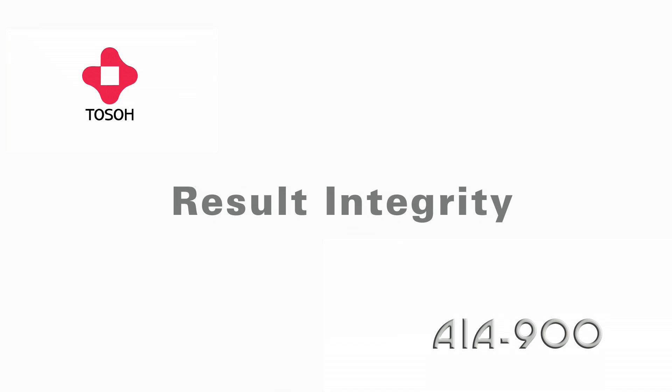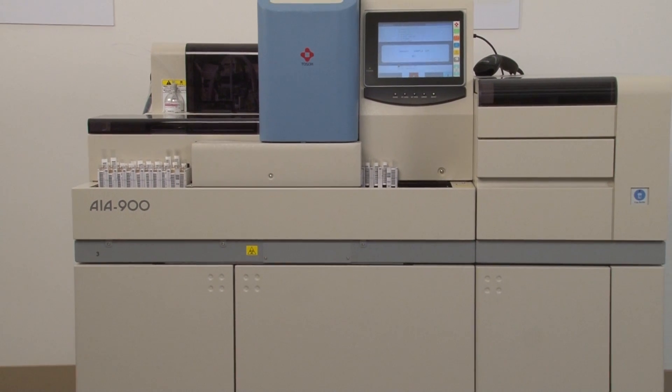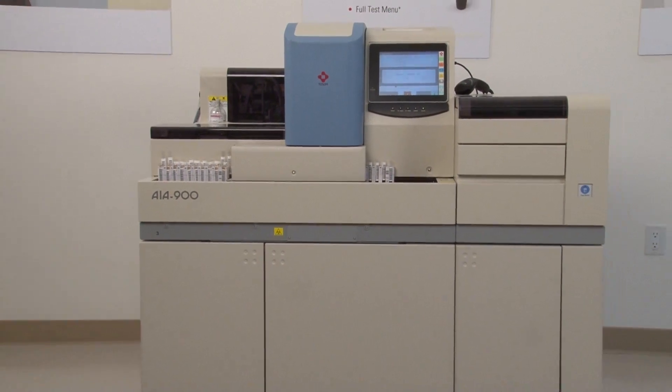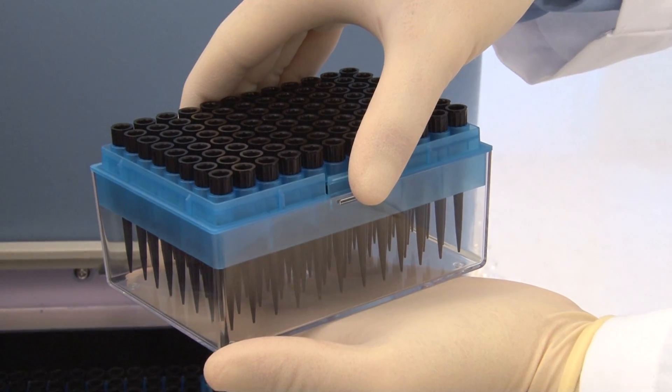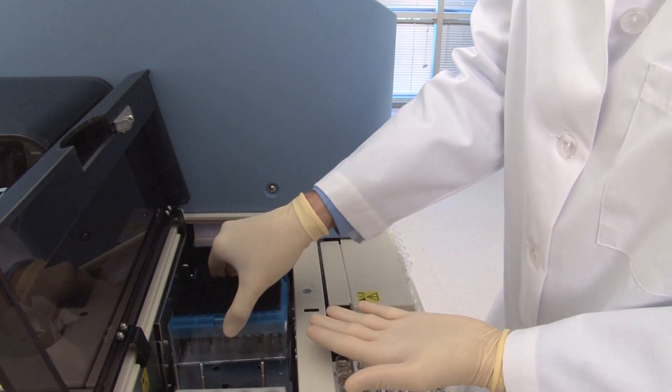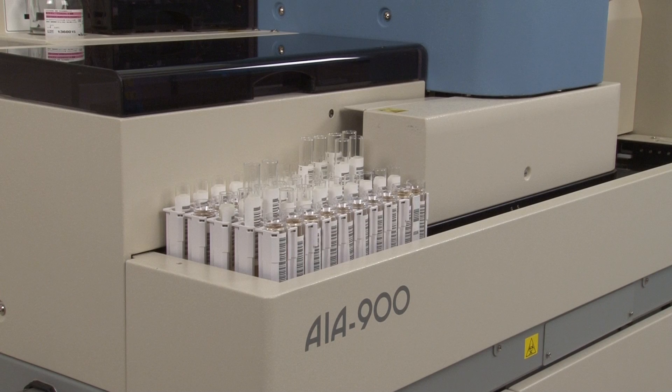Result integrity. To ensure the highest level of result integrity, the AIA 900 features several built-in safeguards including conductive disposable pipette tips for automated sample level sensing and elimination of carryover.